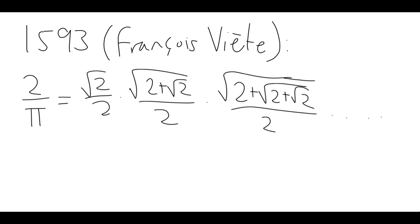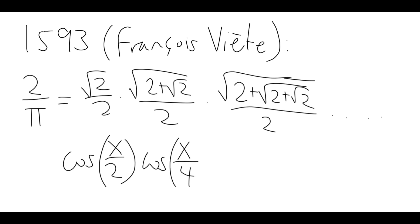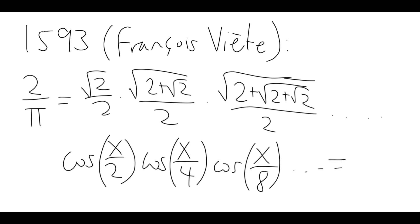This is actually a special case of a more general formula: cosine of x over 2, times cosine of x over 4, times cosine of x over 8, and so on. It doesn't appear that Viète actually had this general formula, but one can use essentially the same idea. The answer ends up being sine x over x, and to prove this it's really just half-angle formulas over and over again — really what the Greeks were doing thousands of years earlier, just in a slightly different form.